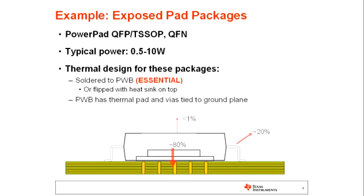Another example focuses on the package itself — specifically a common package construction in many analog applications for devices with relatively high power dissipation that need a good thermal path. This is what we call exposed pad packages. The IC die is sitting on a pad that is exposed on the outside of the package. Common examples include power pad or exposed pad QFP, TSSOP, and other package families. QFN or quad flat no-lead packages are almost exclusively exposed pad packages. These packages can support power ranging from as low as half a watt up to the 5–10 watt range if the surrounding system thermal resistance is well managed.